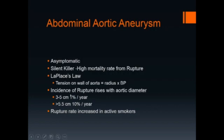Incidence of rupture rises with aortic diameter. For aortas that are 3 to 5 cm in diameter, it is 1% per year. When the aneurysm increases to greater than 5.5 cm, it is 10% per year. The rupture rate is increased in active smokers.